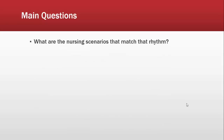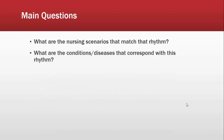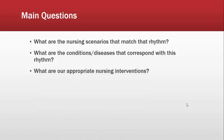This is the part where you want to begin to think more critically. What I mean by thinking more critically is asking yourself questions — aside from just memorizing the material. When you think critically, ask yourself: What are the nursing scenarios that match that rhythm? What are the conditions and diseases that correspond with this rhythm? What are the appropriate nursing interventions? It's about knowing the rhythm, knowing what scenario would look like that rhythm, what disease would go with that rhythm, and then how you would respond — what would you intervene with. Because the exam is trying to see if you are an advocate for your patient and recognize what's going on with them.